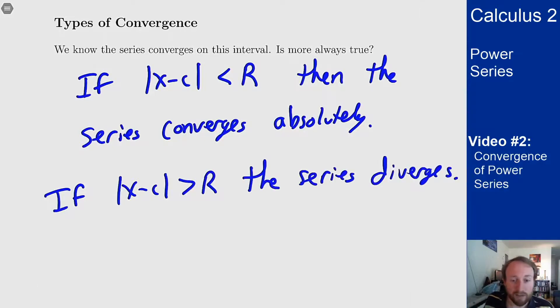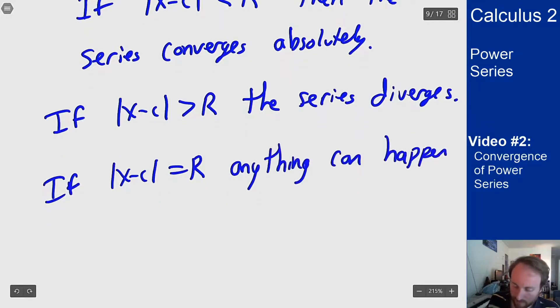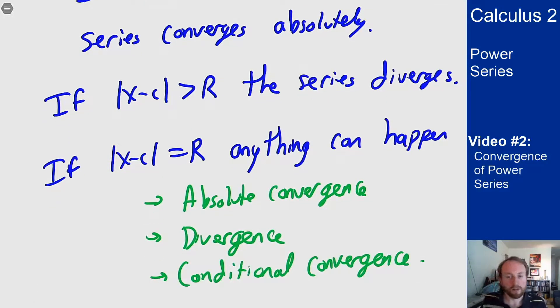But when it equals r things can get strange and basically anything can happen. You can get absolute convergence, you can get divergence, or you can get conditional convergence. All of these are possible at the endpoints of your interval which means you have to check them specifically to see what happens.